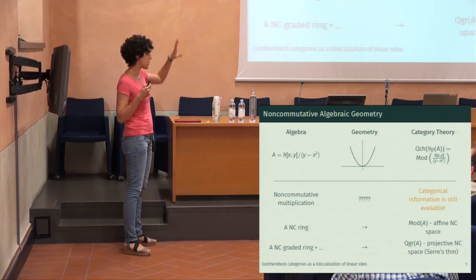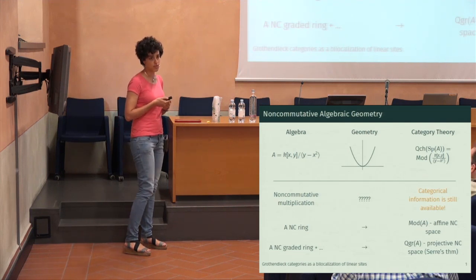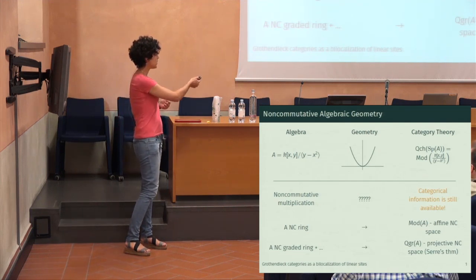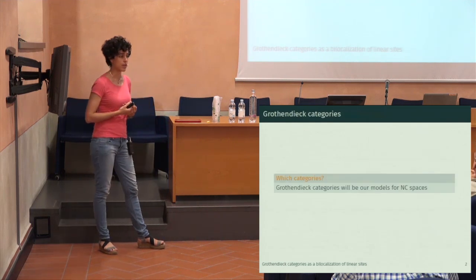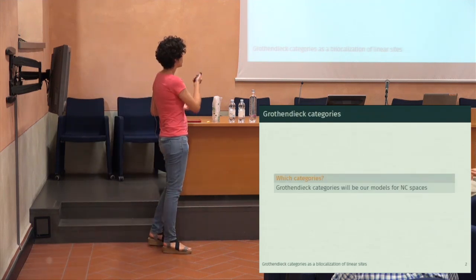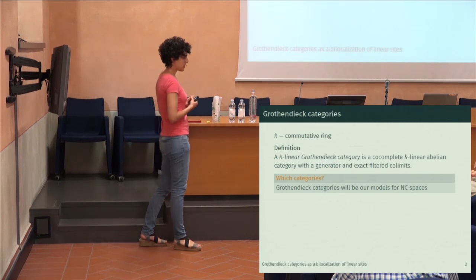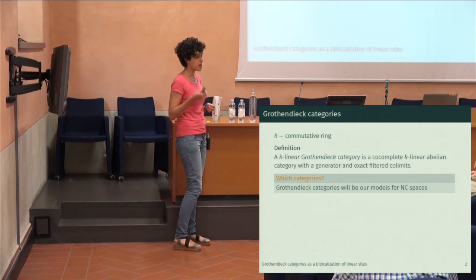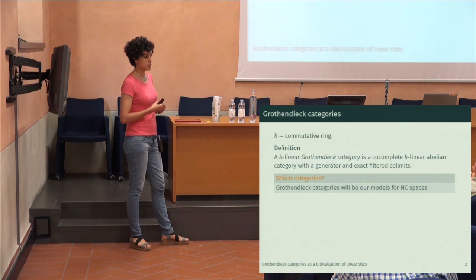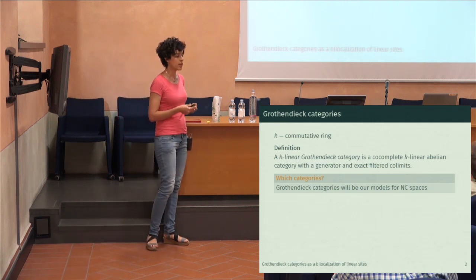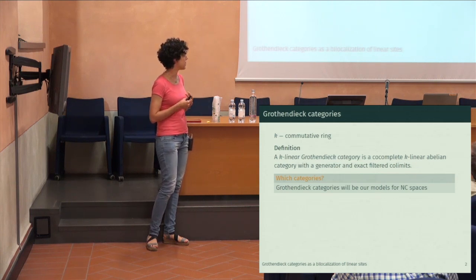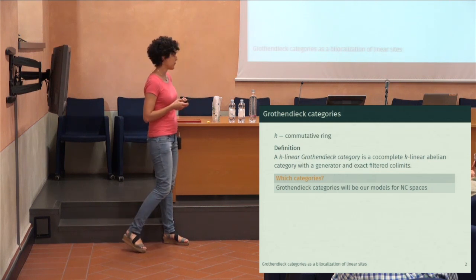So what will be the categories that we consider as non-commutative schemes? These will be Grothendieck categories. A K-linear Grothendieck category — fixing K a commutative ring for the rest of the talk — is a K-linear abelian category which, in addition, has very nice properties: it is co-complete, has a generator, and filtered colimits commute with finite limits, which is basically saying that filtered colimits are exact.